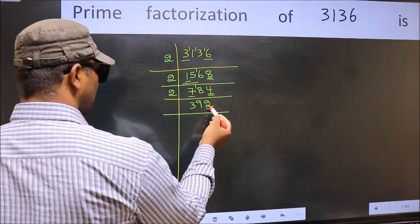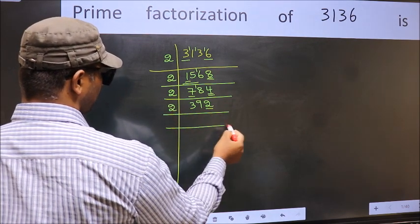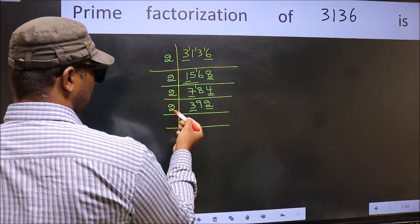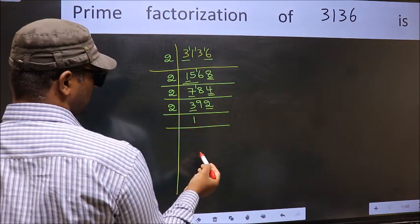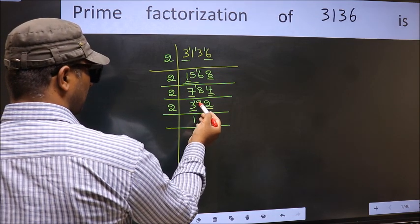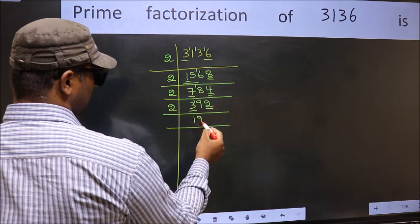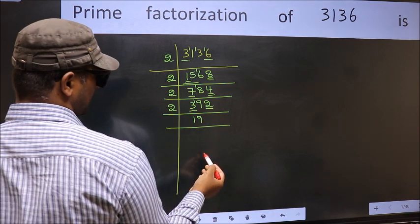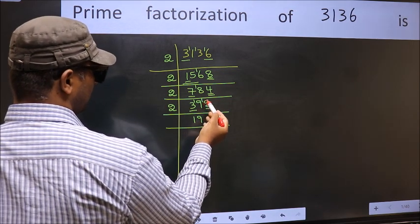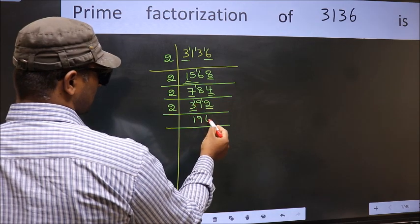Now the last digit is 2, so take 2. First number 3 — a number close to 3 in the 2 table is 2×1=2. 3 minus 2 is 1, carried forward 19. A number close to 19 in the 2 table is 2×9=18. 19 minus 18 is 1, carried forward 12. When do we get 12 in the 2 table? 2×6=12.